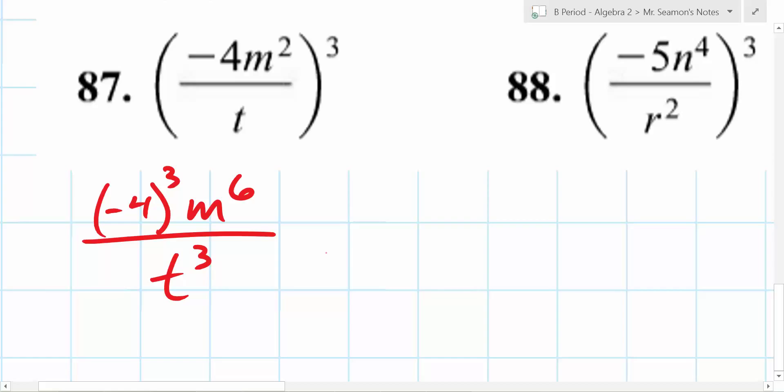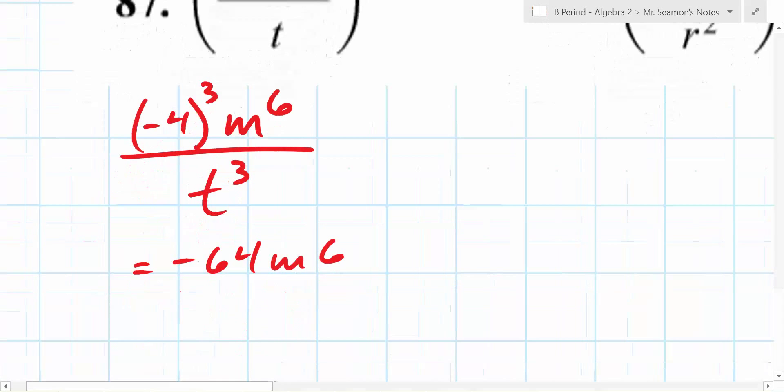No, you could stop there. That's fine. Now, the other thing is, you have to make a decision. Do you want to cube 4? You could. 4 times 4 times 4 is 64. So you could write this as negative 64 m to the 6th over t cubed. You could write it that way if you wanted to.